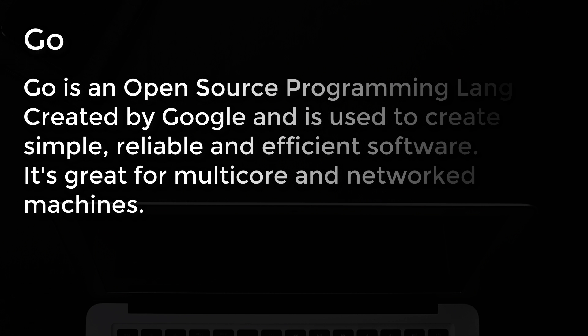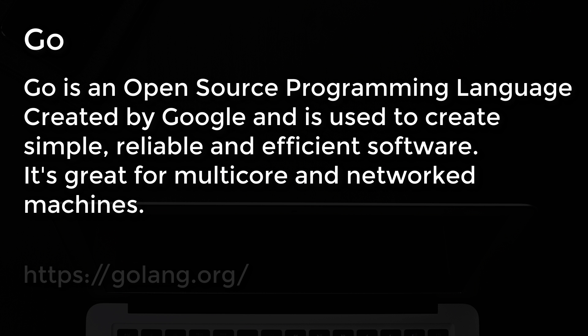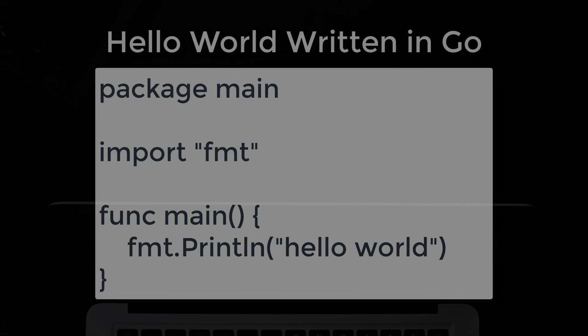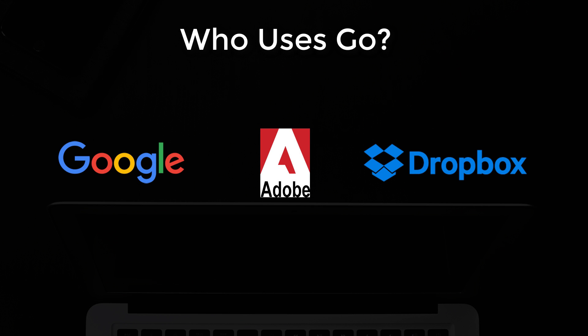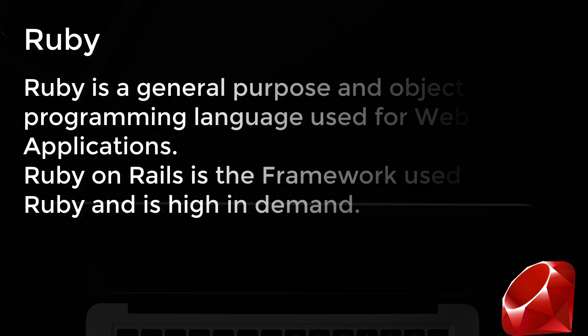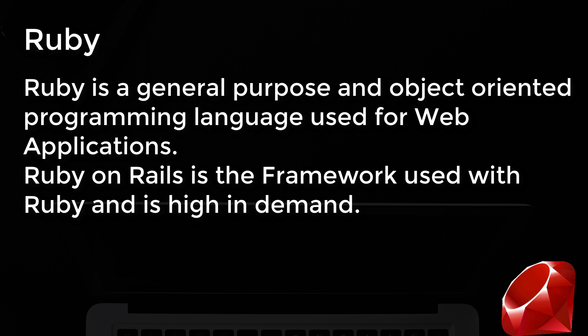Number 9: Go. Go is an open-source programming language created by Google and is used to create simple, reliable, and efficient software. It's great for multi-core and networked machines. This is how you write hello world in Go, and here are just a few of the companies that use it.